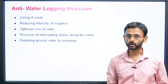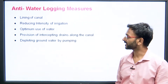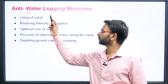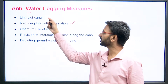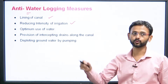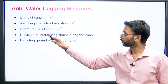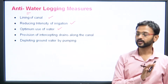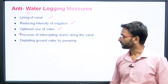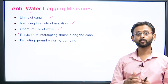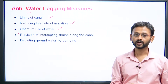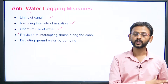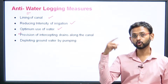Now let us talk about anti-water logging measures — how we can avoid or reduce water logging. First is lining of the canal. Second is reducing the intensity of irrigation — irrigate only as much as required for that land. Third is optimum use of water. Fourth is provision of intercepting drains along the canal so excess water is drained out. Fifth is depleting groundwater by pumping — if the water table rises too much and affects plants, pump out the water.